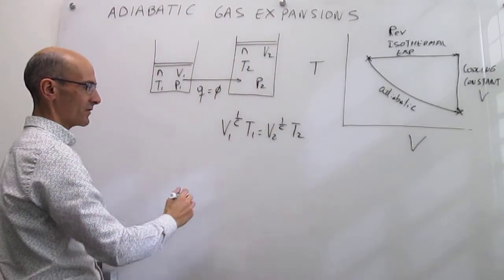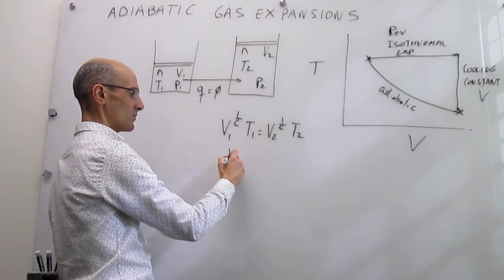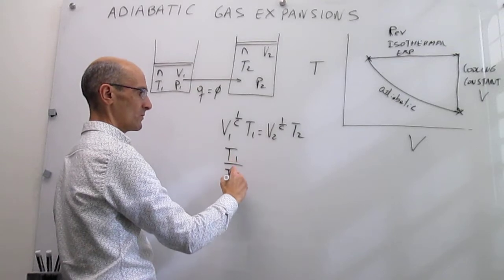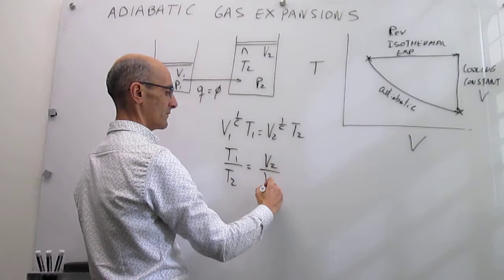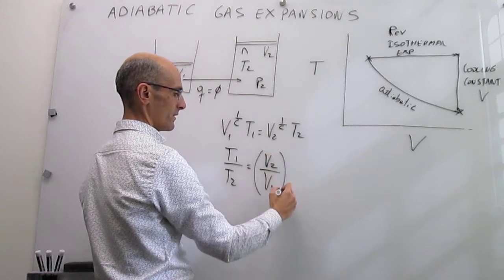We are going to calculate here temperatures and volumes. We are going to have T1 over T2 is going to be equal to V2 over V1 to the 1 over C.